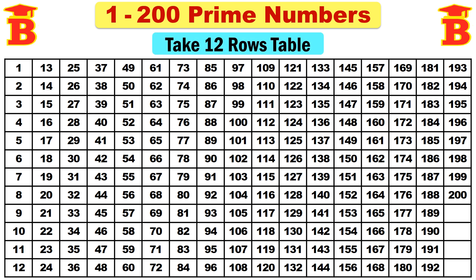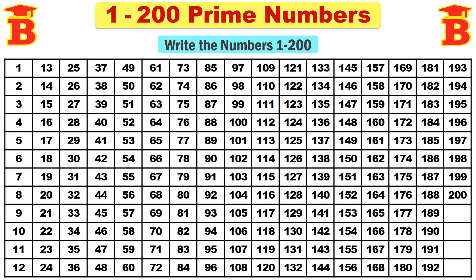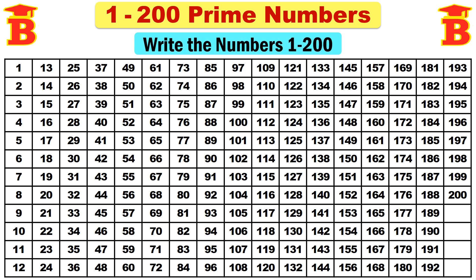Consider a 12-row table like this. Take the numbers from 1 to 200 and write them column-wise. Start from 1, 2, 3, 4, 5, 6, 7, 8, 9, 10, 11, 12, and then 13 in the second column, 14, 15, etc., up to 24, and then 25 in the third column. Like that, we enter the numbers column-wise up to 200.